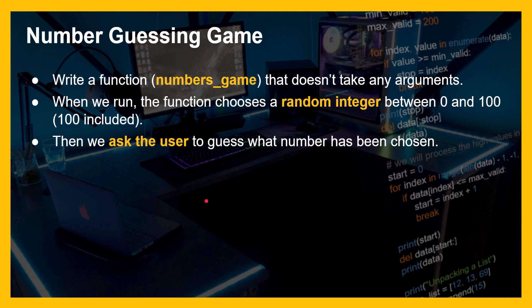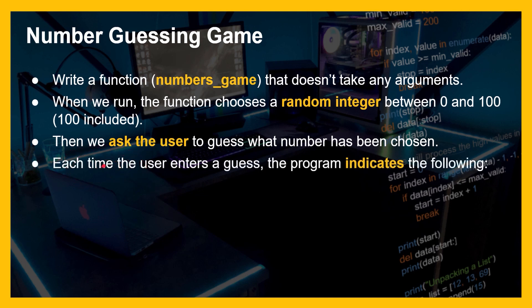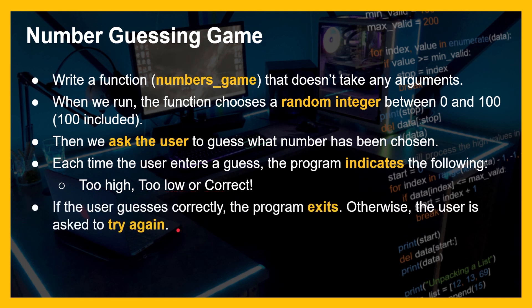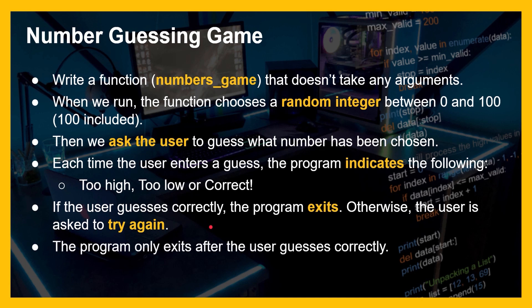Then we ask the user to guess what number has been chosen. Each time — this is very important — each time the user enters a guess, the program indicates the following: one, it's too high; two, it's too low; or three, it's correct. So whenever a user inputs a number we need to know whether it's too low, too high, or correct. If the user guesses correctly the program exits; otherwise the user is asked to try again. It has to do something with loops. The program only exits after the user guesses correctly. If you want to tackle this on your own, pause the video. If not, I'm going to start it right now.